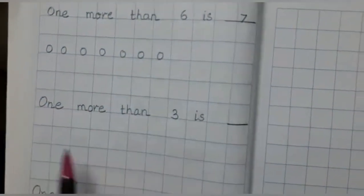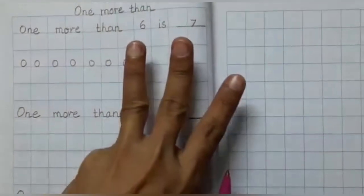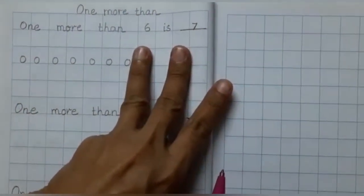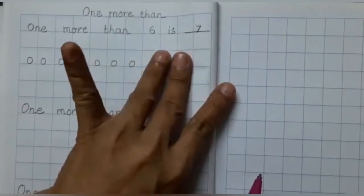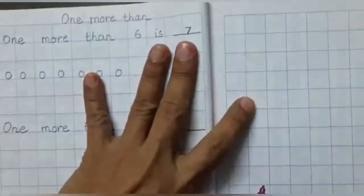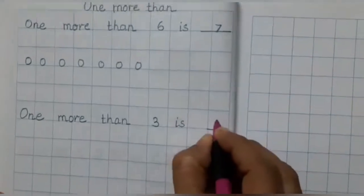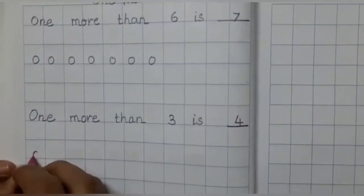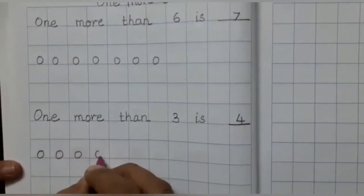One more than three. Here I have three fingers — one, two and three. What comes after three? What is one more than three? I will add one more finger and it will be one, two, three and four. So let's write number four. And how many balls are we going to draw? Yes, four balls — one, two, three and four.